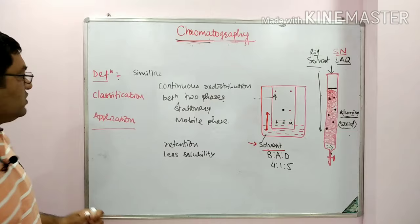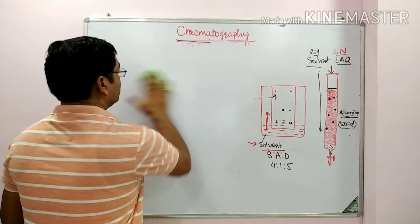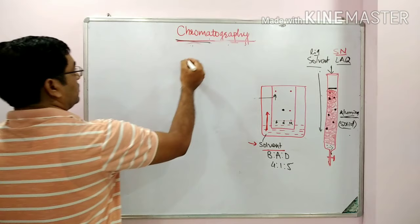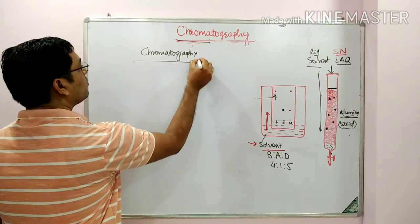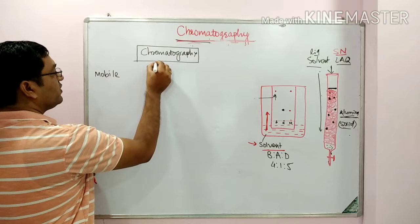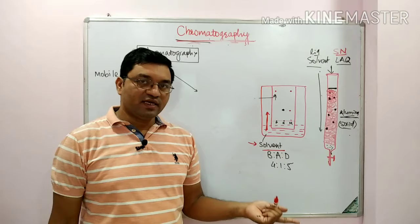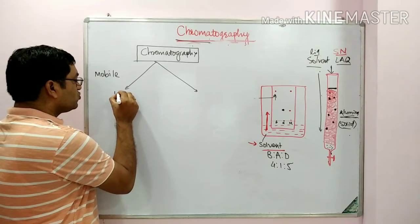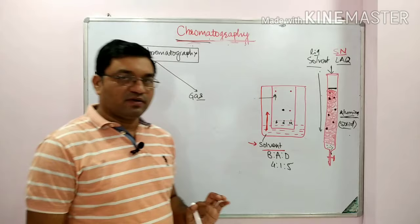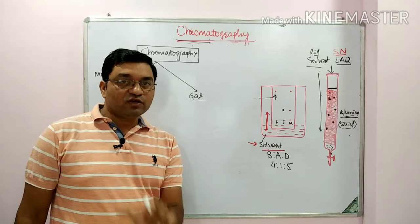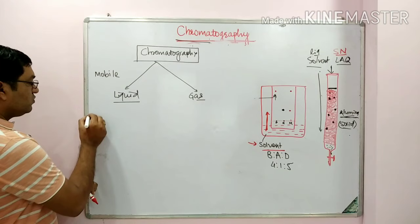Now we will see the classification and types of chromatography. On the basis of mobile phase, it is divided into two main types: the mobile phase can be liquid or gas — a solid cannot be a mobile phase. If the mobile phase is gas, it is known as gas chromatography; if it is liquid, it is known as liquid chromatography. For example, HPLC — high performance liquid chromatography — is a type of liquid chromatography.